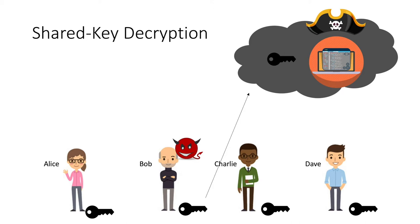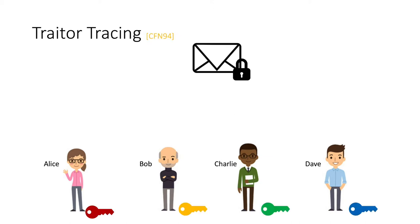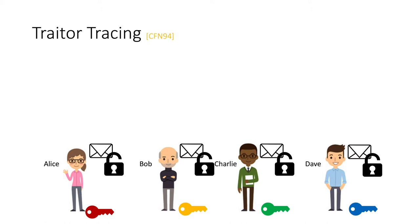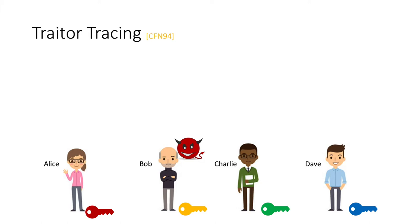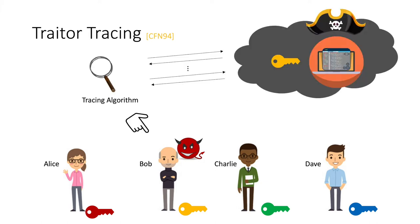In a simple shared key system, since everyone holds the same single shared key, there's no way to tell who actually leaked it. This is where traitor tracing comes in — an old concept introduced by Chor et al. in 1994. In a traitor tracing scheme, everyone in the group holds a key of their own. The scheme still guarantees broadcast functionality, but when a malicious member leaks a key, there is a tracing mechanism that, given access to what was leaked, can correctly identify the traitor.